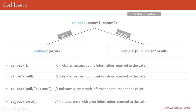If we call the callback with the first parameter as an error object, error string, or some string, it means an error occurred and that error information is returned to the caller. The first parameter will automatically be used as the data returned to the user, so you don't need to provide the second parameter.